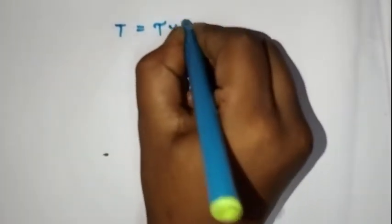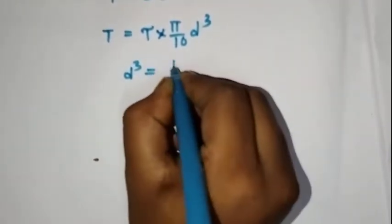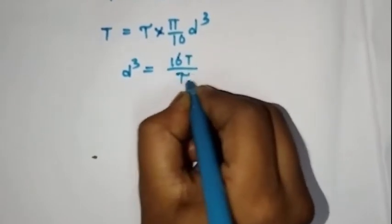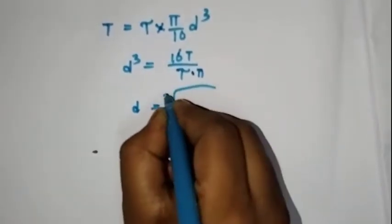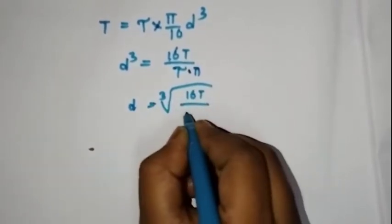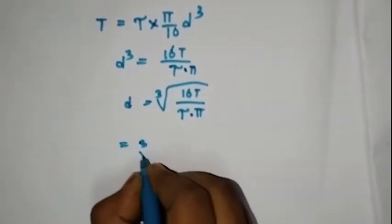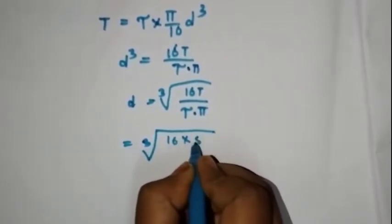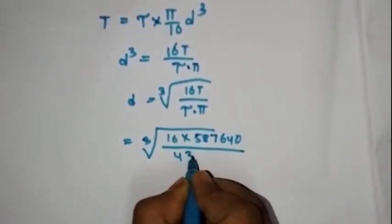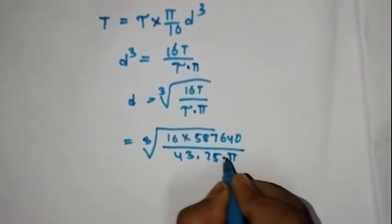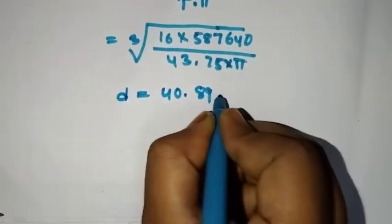T is equal to tau into pi by 16 d cube. D cube is equal to 16 T by tau into pi. D equals cube root of 16 T by tau into pi. T value is 587640, tau is 43.75. D is equal to 14.89 mm. This is the answer for solid shaft.